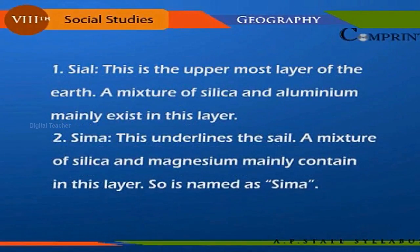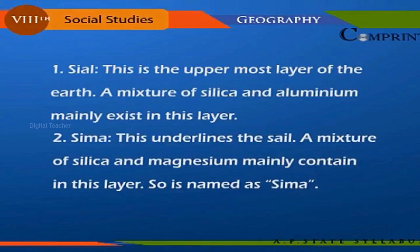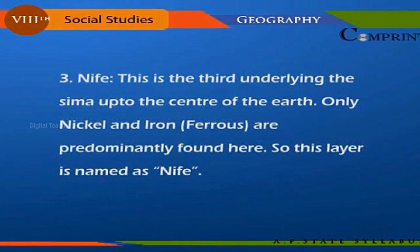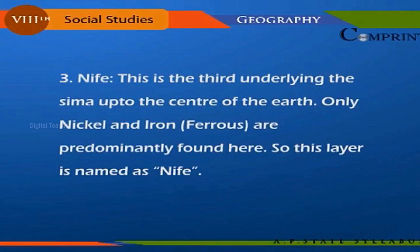First, Sial: this is the uppermost layer of the earth, where a mixture of silica and aluminum mainly exists — hence named Sial. Second, Sima: the layer underlying the Sial, composed mainly of silica and magnesium. Third, Nife: this is the third layer underlying the Sima, extending to the center of the earth, where only nickel and iron are predominantly found — hence named Nife.